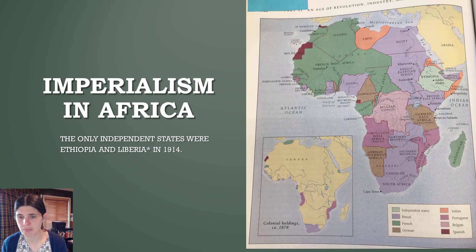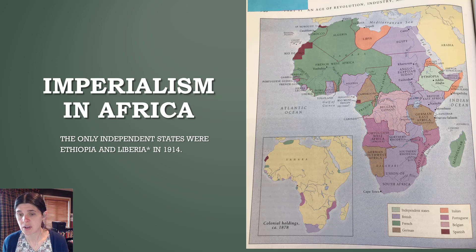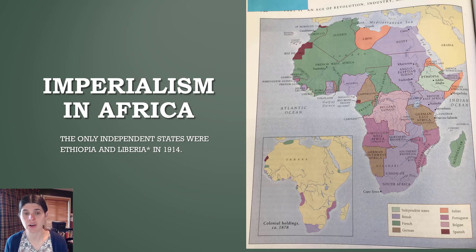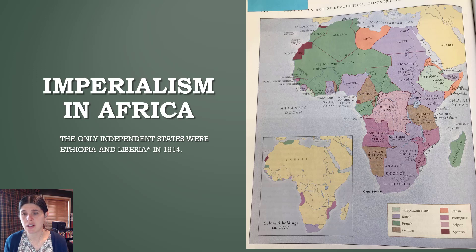Then let's turn to Africa. If you notice the smaller map here, these are the colonial holdings in 1878. Africa is overwhelmingly independent at this point, with some coastal regions being controlled by European powers — probably most notably South Africa under British control. Now looking at the bigger map in 1914, in less than 150 years, the only independent states left in Africa were Liberia — though the U.S. had very heavy involvement there — and Ethiopia. The Italians had tried to take Ethiopia, but couldn't; Ethiopia stayed independent through this whole time.